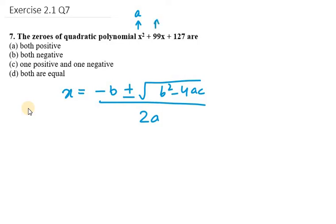Now we know that a is the coefficient of x², b is the coefficient of x, and the last term is c. So what we will do is put all the values into equation number 1.